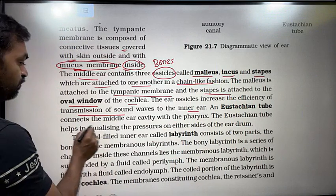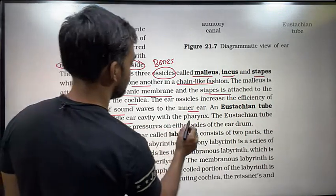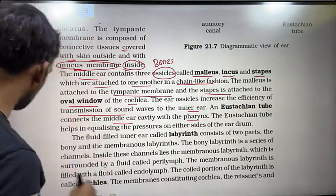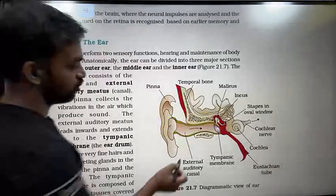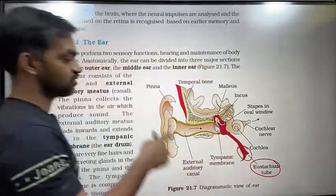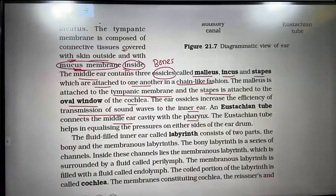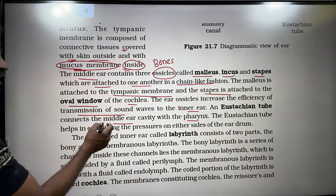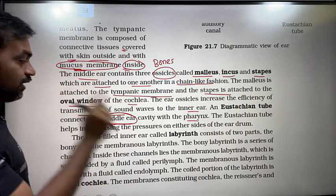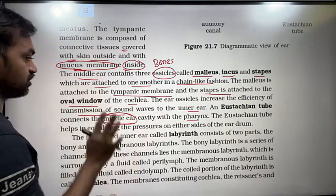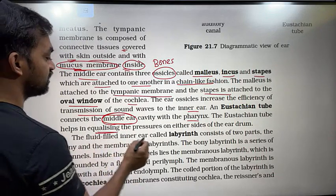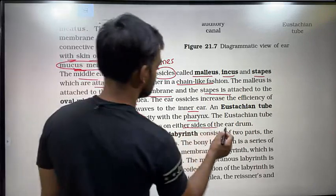The Eustachian tube connects the middle ear cavity with the pharynx. The pharynx is the common passage for food and air. The Eustachian tube helps in equalizing the pressures on either side of the eardrum.